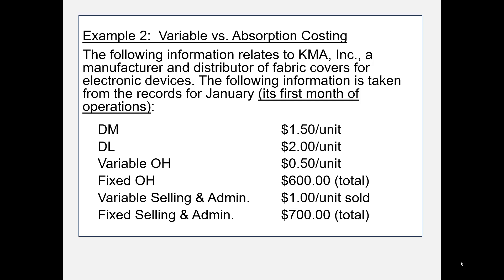Direct material: $1.50 per unit. Direct labor: $2 per unit. Variable overhead: $0.50 per unit. Fixed overhead: $600 in total. Variable selling and administrative expense: $1 per unit sold. Fixed selling and administrative expense: $700 total.